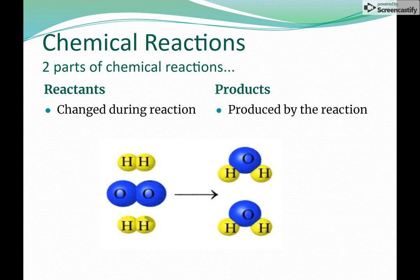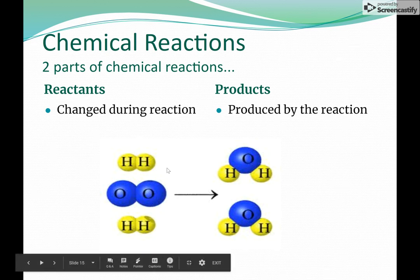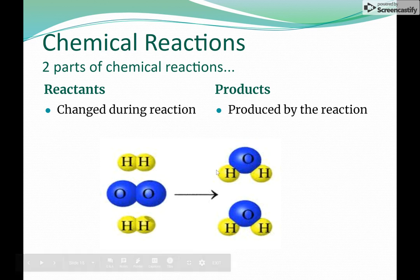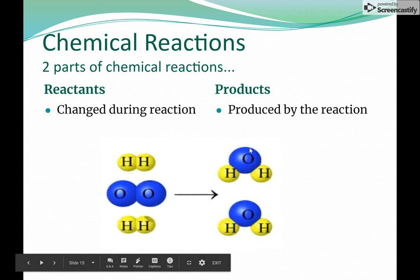Chemical reactions are where we form bonds between elements. Sometimes that requires us to break bonds between certain atoms in order to reform them. The two parts of a chemical reaction are the reactants, which are the things that are changed during the reaction, and the products, which are produced or the outcome of the reaction.